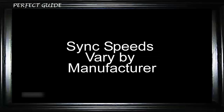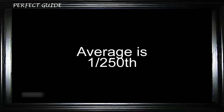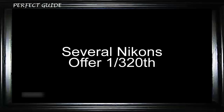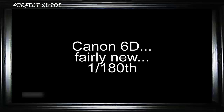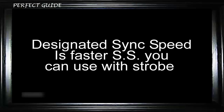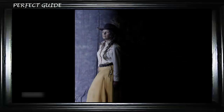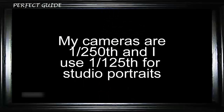Different cameras with different shutters have different flash sync speeds when using strobe or flash. In most cameras, this averages about 1/250th of a second, but in some cameras it's only 1/60th. A couple of cameras allow 1/320th but not many. This is called the designated sync speed — the fastest shutter speed you can use with flash or strobe. If you use a shutter speed faster than the designated sync speed, you might get an image that's about half black and the rest normally exposed. So never use more than your designated sync speed in the studio.